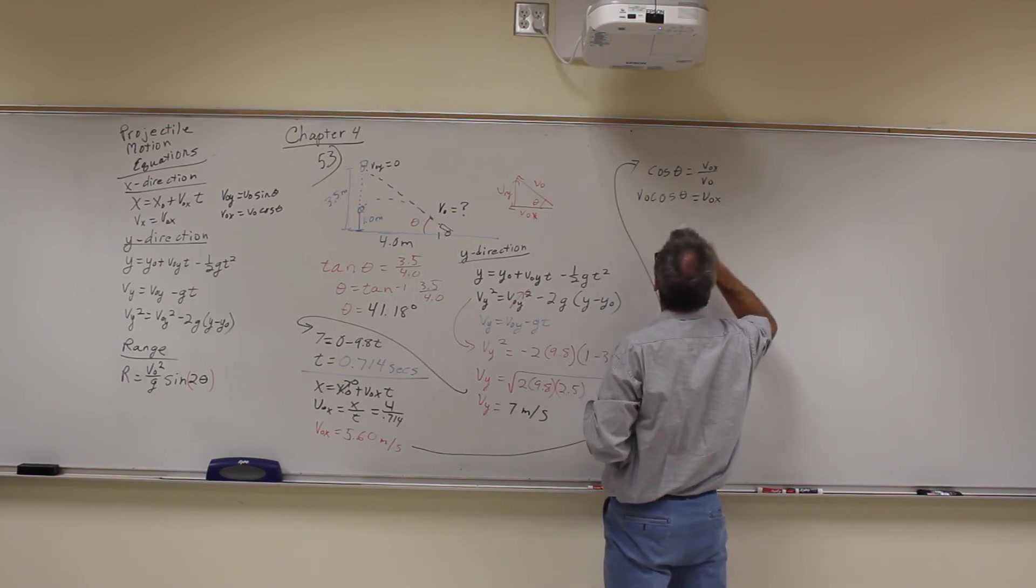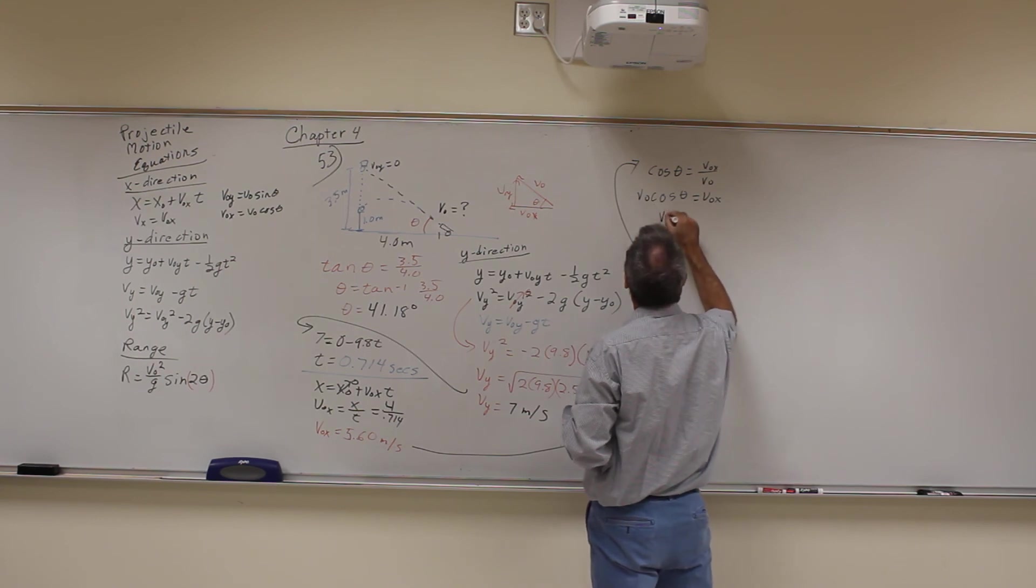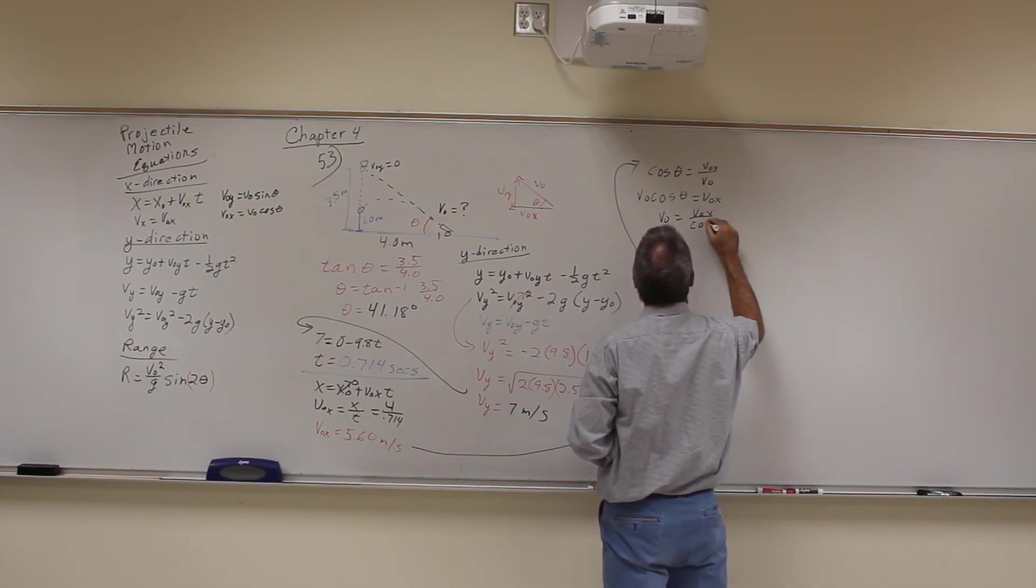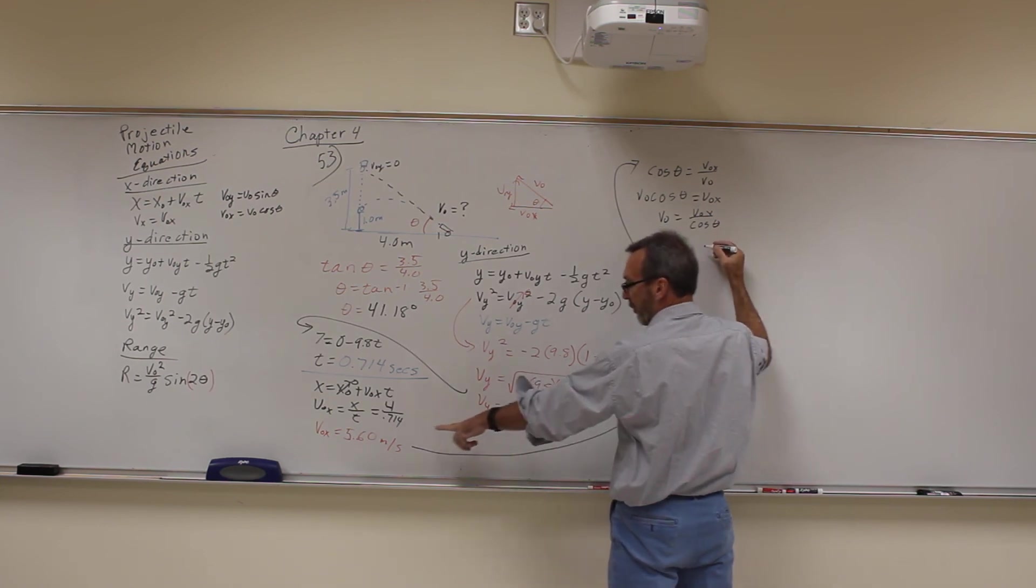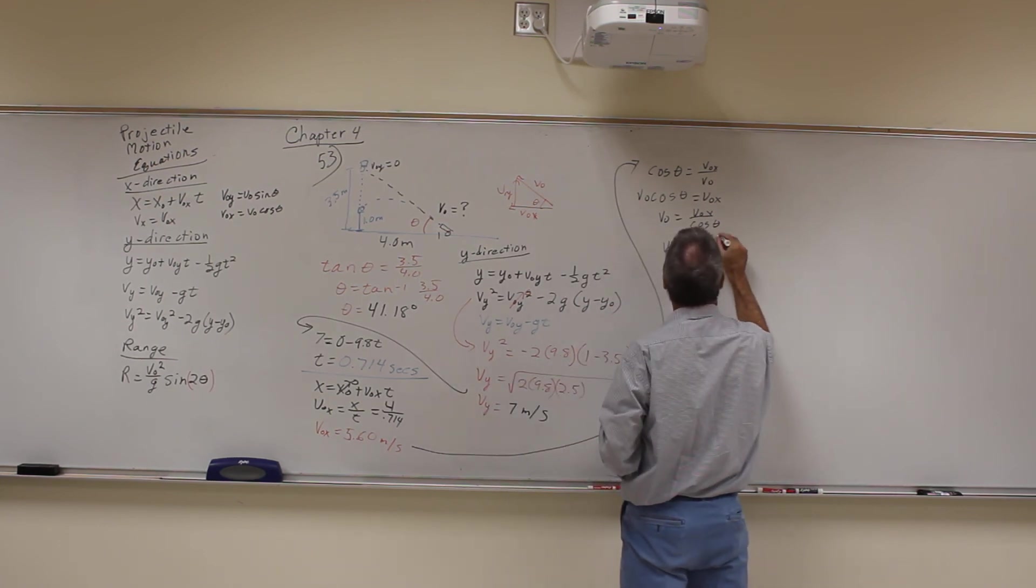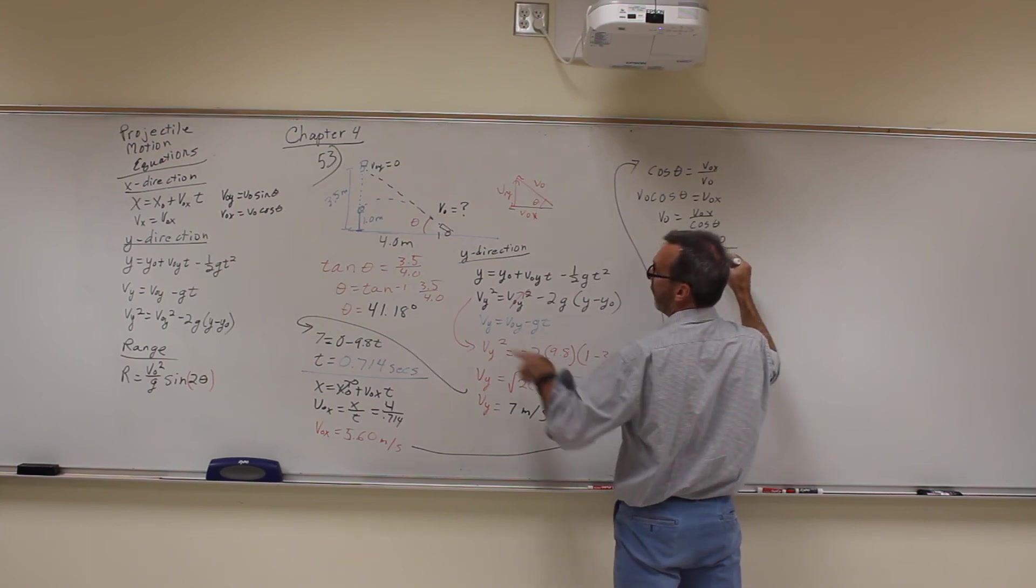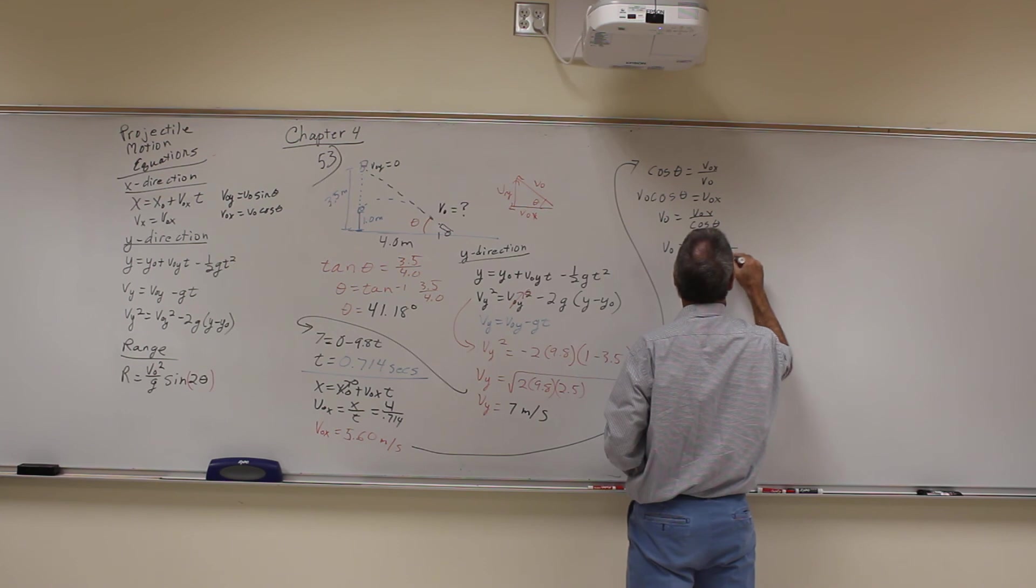But I don't really want that, I want to actually solve it for V0. So V0 is equal to V0 X over cosine of theta, or V0 is equal to V0 X 5.60 divided by the cosine of my angle 41.18 degrees.